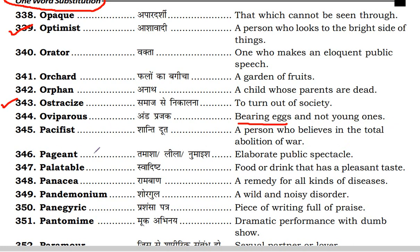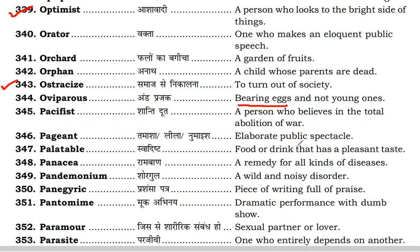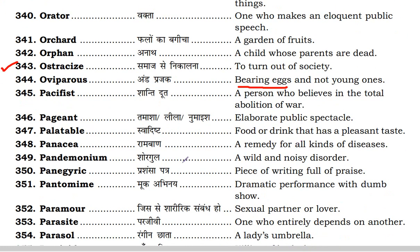Next is pacifist. Pacifist is a person who believes in the total abolition of war — which means you don't like war. That is pacifist: a person who believes in the total abolition of war.